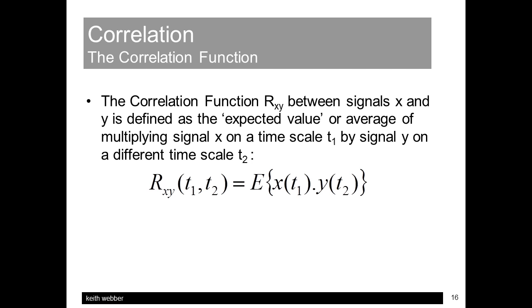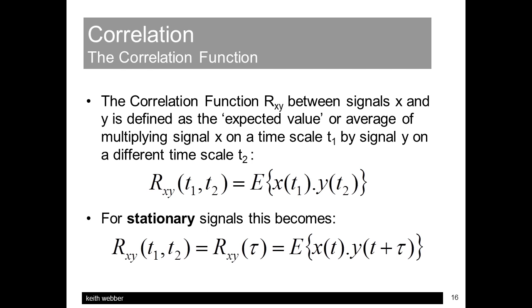It's the expected or average value of the multiplication of the two signals. If the signal statistics are stationary, as we're assuming, their statistical averages don't change with time, and the correlation becomes a function only of the difference, Tor, between T1 and T2, as we shall see shortly.